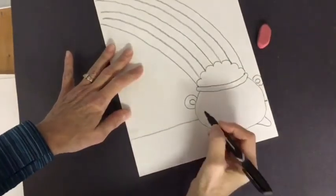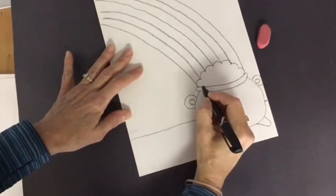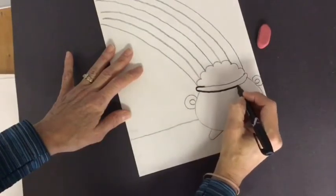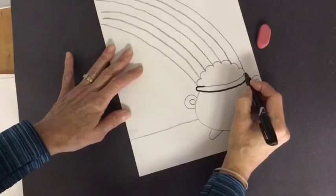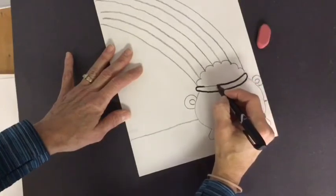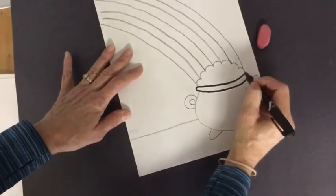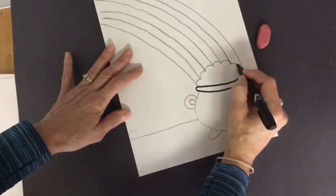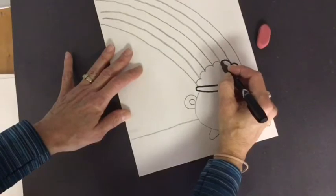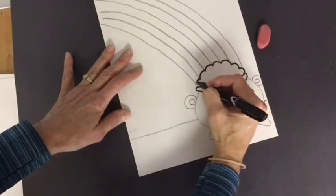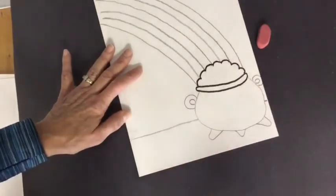Next step is to trace your pot of gold. Just trace those lines with your Sharpie marker. Go nice and slow. Anything that you erased and did not want to include, don't trace. So I'm going to just trace everything here with my Sharpie marker. I'll give you some time to do that.